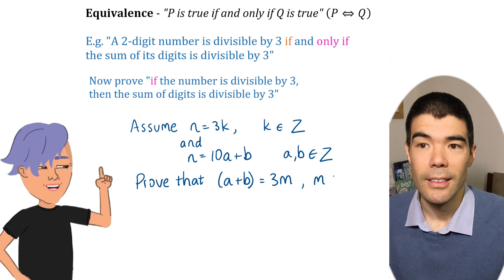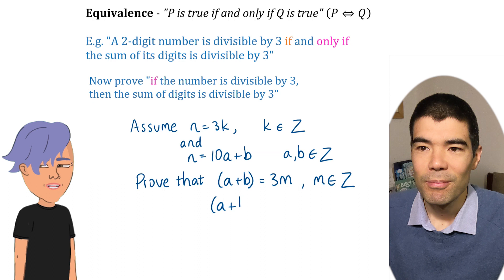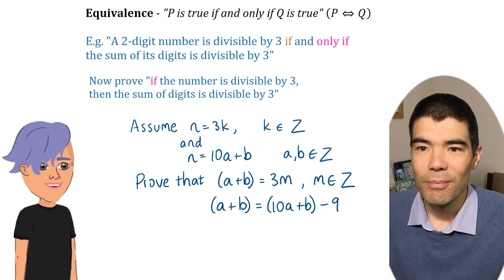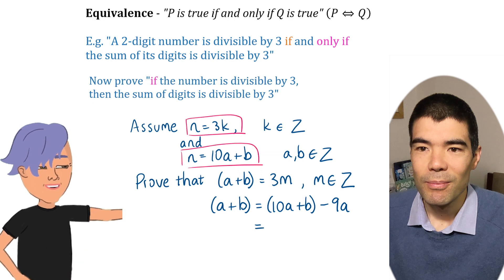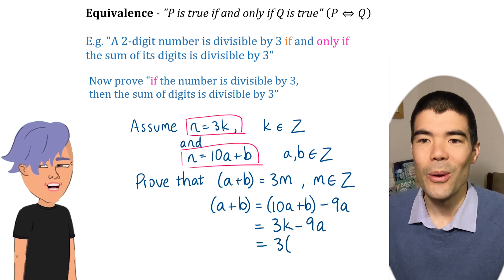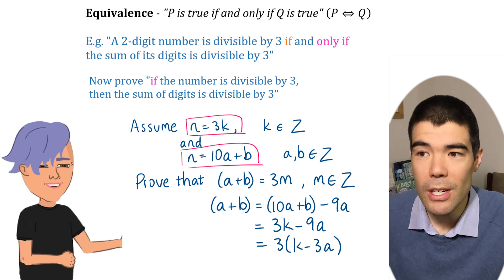I mean 3m for some integer m. That's it. Doing well. So a plus b. Well, like the opposite of before, it's 10a plus b minus 9a. 10a plus b is n, which is 3k. So a plus b must be a multiple of 3. Well done. We've proved both directions, so we've proved the statements are equivalent.